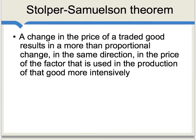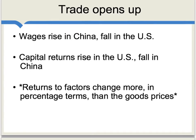A weaker version of factor-price equalization is the Stolper-Samuelson theorem, which states that a change in the price of a traded good results in a more than proportional change in the same direction in the price of the factor that is used in the production of that good more intensively. To make this more concrete, imagine that trade opens up between the U.S. and China. The theorem predicts wages rise in China and fall in the United States, while capital returns rise in the United States and fall in China. The returns to the factors will change more in percentage terms than the goods prices will change.